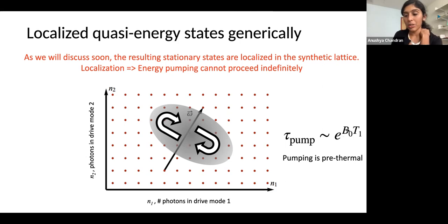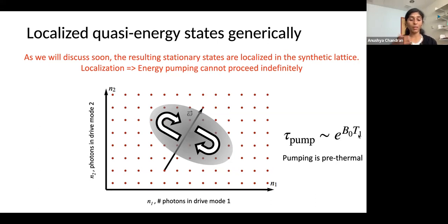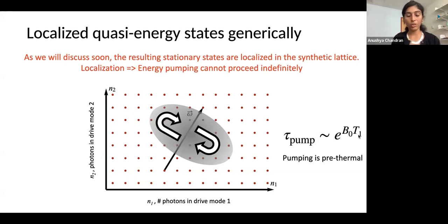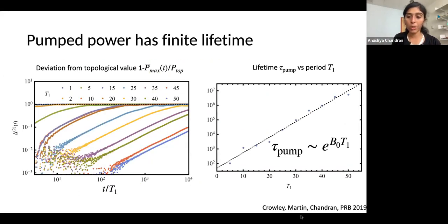Experimentally, this exponential lifetime is not going to be the relevant non-ideality — there are much more important non-idealities that will limit any energy pumping observed. So this pumping is not a phase of the qubit because if you waited long enough, it would go away. This is not something that characterizes the steady state of a qubit driven by two tones. In our early numerics to confirm this, we define measures of how the energy current is decaying in time, fit that to obtain a lifetime. On a semi-log axis the lifetime lies on a straight line, and you can make it as large as you want by simply taking the period of your drives to be larger.